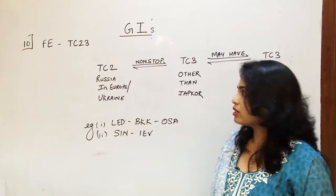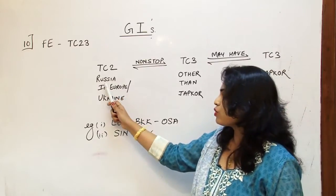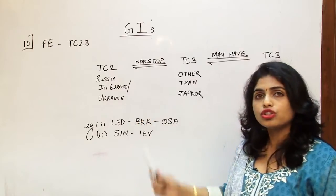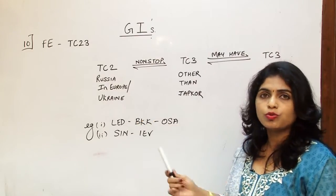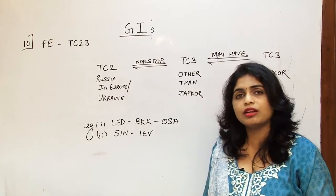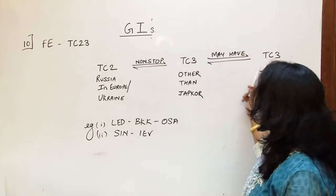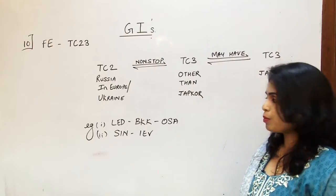So the conditions that we have to look for is Russia in Europe and Ukraine. It has to go non-stop to Area 3 but it cannot be to JAPCOR because it will then fall into some other GI, and it may further ahead may have JAPCOR.